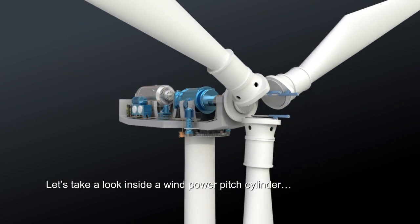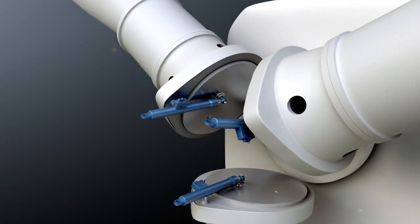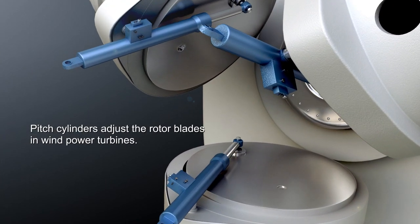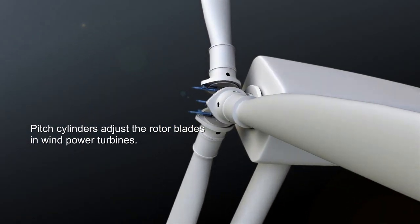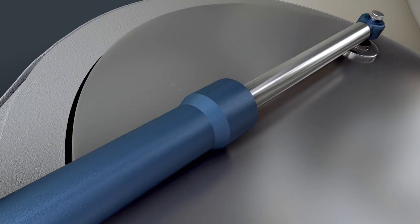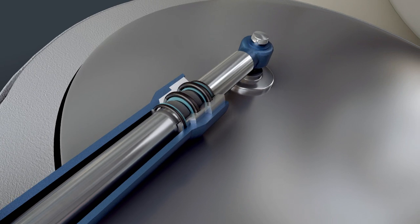Let's have a look at the pitch cylinder in more detail. The function of the pitch cylinder is to adjust the rotor blades of a wind turbine. It works constantly, moving the turbine's blade to maximize energy production from the wind.